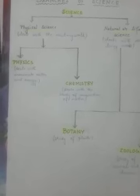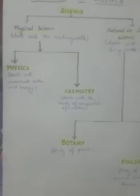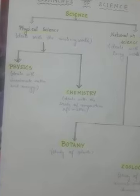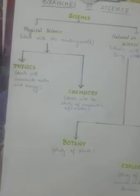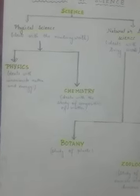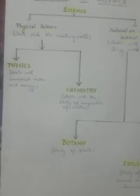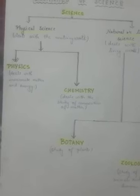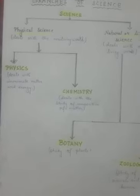Now the next subdivisions: physical science is subdivided into two branches — physics and chemistry. Physics deals with inanimate matter and energy; inanimate means non-living. The study of heat, light, and other energy forms are studied in physics. Chemistry deals with the study of the composition of matter — for example, air. If we try to see what the composition of air is, we find the different gases present and water vapor, and all these things come under chemistry.